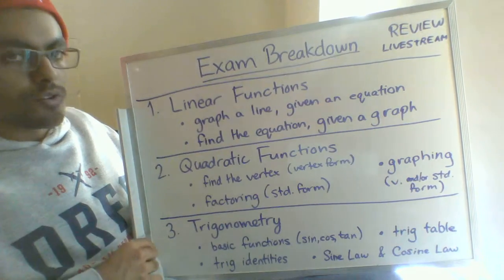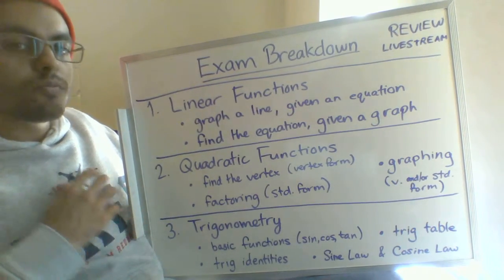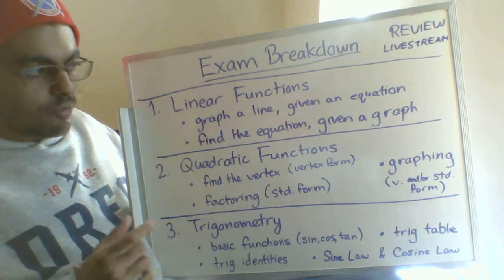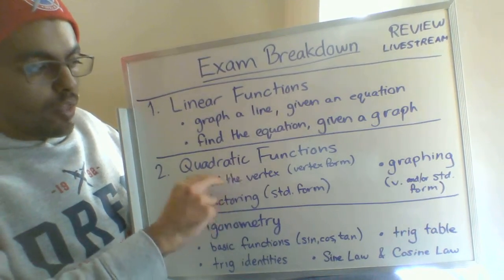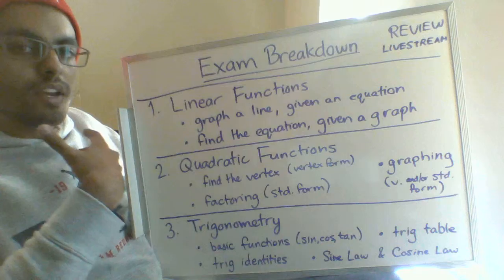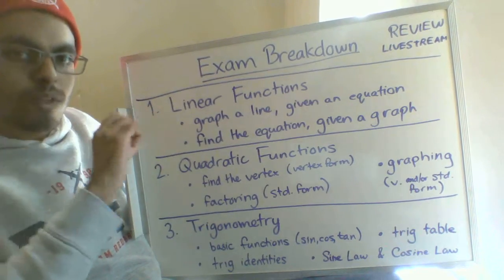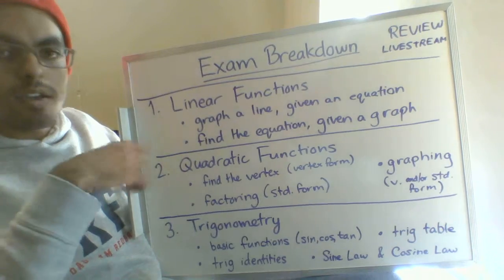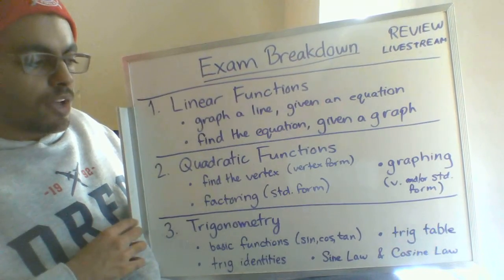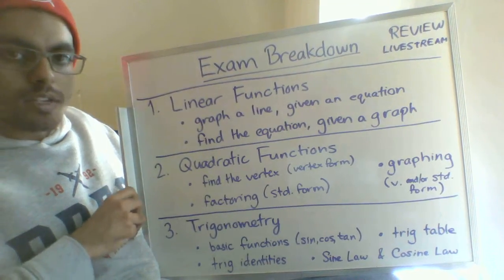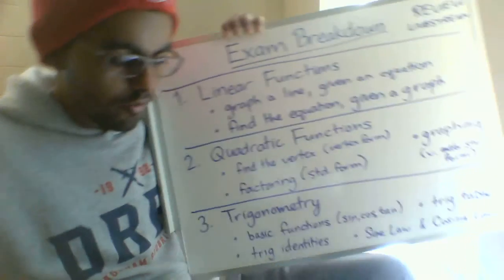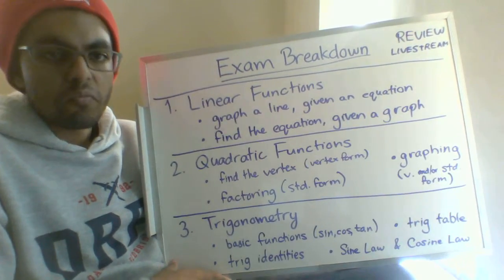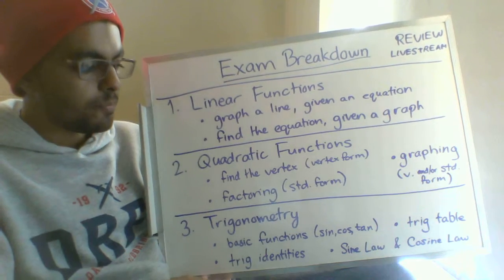The second section is quadratic functions. We spent a lot of time on quadratics, so I'm not going to ask a ton of stuff. It'll be a few things like finding the vertex when given vertex form — the (x - h)² + k form, and there might be an A value in the front. You just have to tell me what the vertex of the parabola would be, for maybe four, five, or six of those.